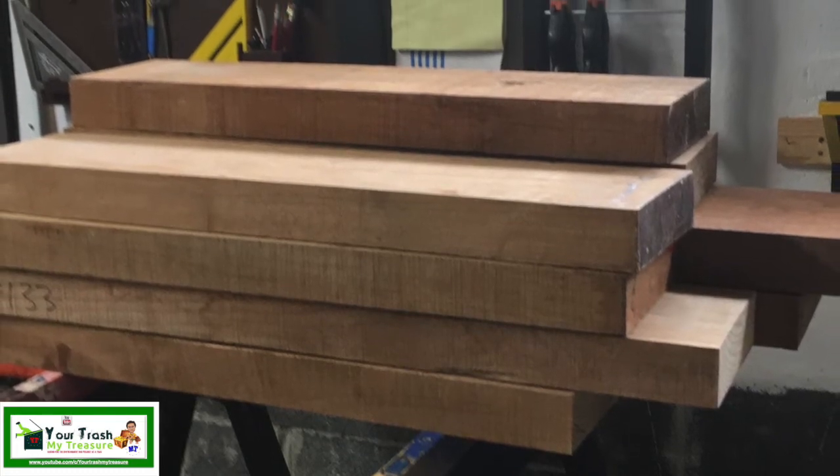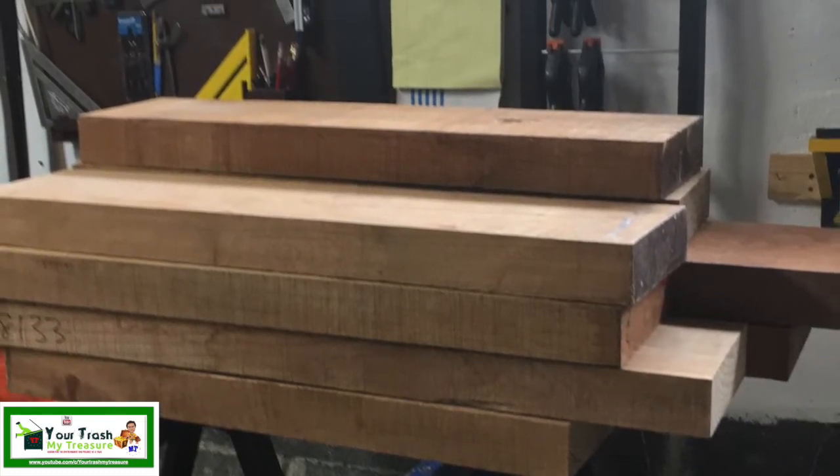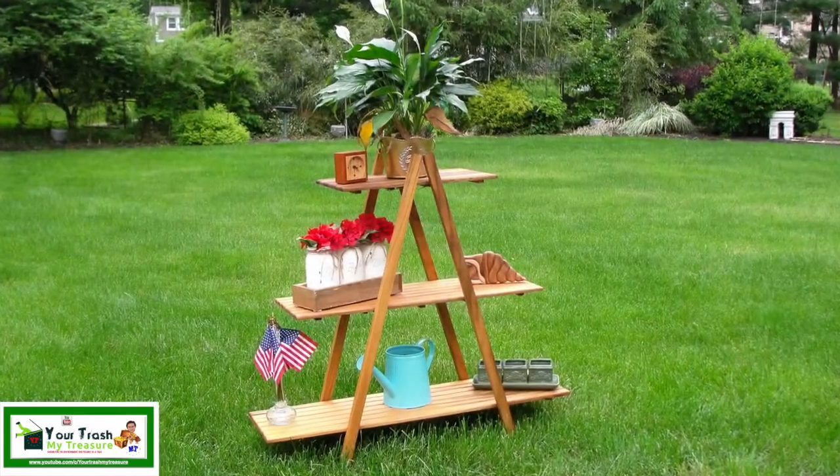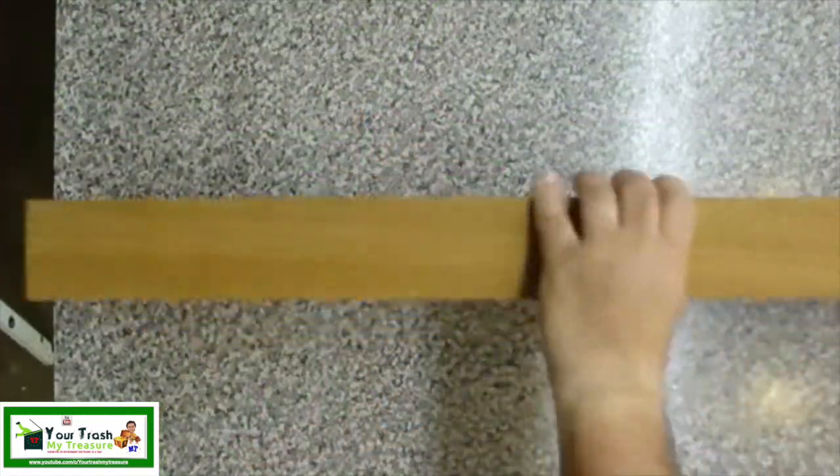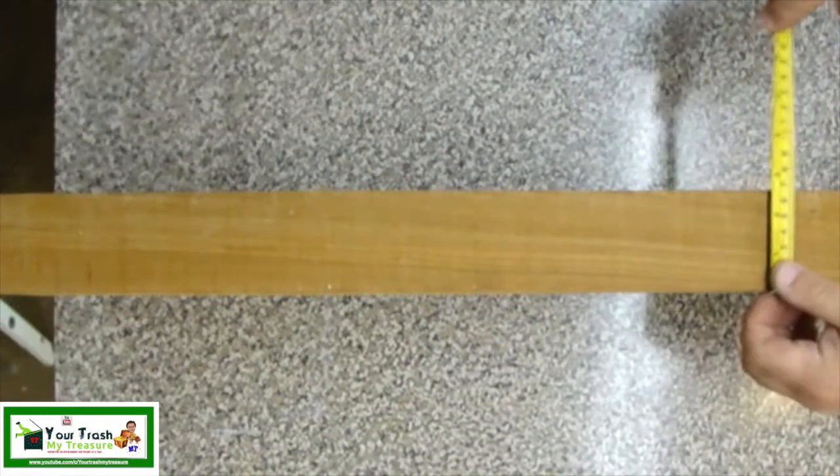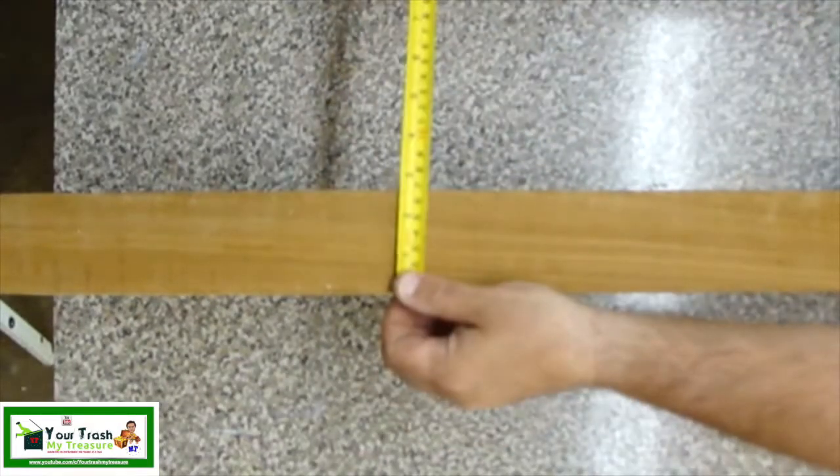I recently got my hands on some teak and using two of these blocks I made an A-frame shelving unit. These blocks are 42 inches long, 8 inches wide, and two and a half inches thick.